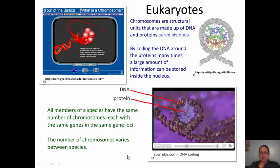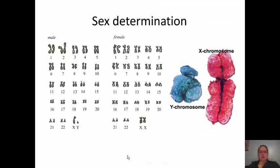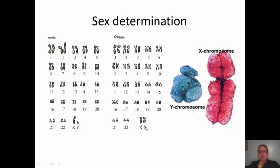That was a great little video showing how DNA is wrapped around histones to form a nucleosome. Moving on to sex determination: here we have all 46 chromosomes from a male and 46 from a female. The X chromosome is much larger, with its centromere located fairly close to the middle. The Y chromosome has a centromere near the top and is much smaller in size. To have a male you need one X and one Y; to have a female you need two X chromosomes.